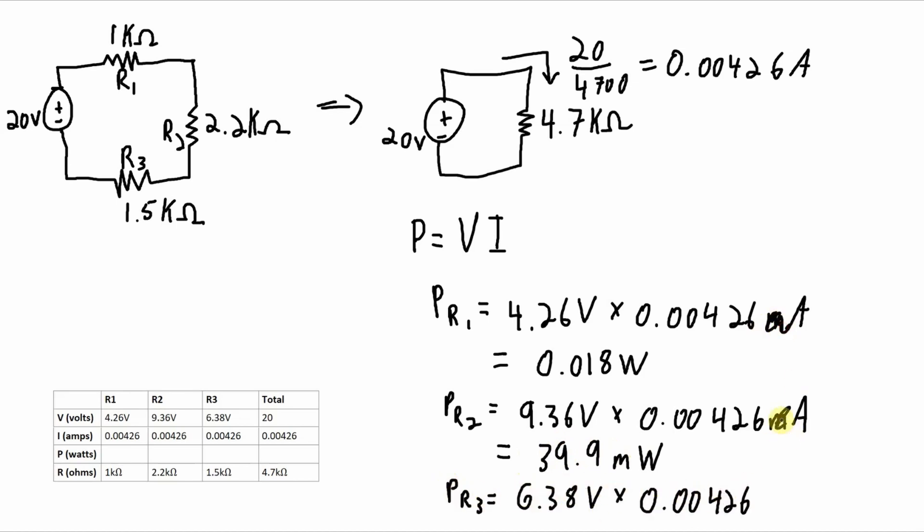Just realized that should be amps, not milliamps. And the power total, two ways to calculate it: one, we could add up these three values, and that will equal the power provided by the source, or we can do V times I again. And I will leave it to you to confirm that PR1 plus PR2 plus PR3 adds up to 85.2 milliwatts.